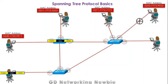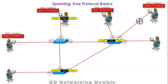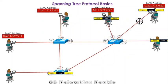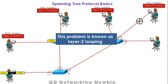Now the frame has reached back to the initial switch, but this switch still doesn't have any entry for the destination MAC address, so it again uses flooding to forward the frame to all nodes. This same process keeps repeating again and again because no switch knows about the ultimate destination, which has actually been disconnected.